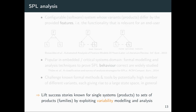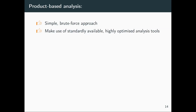Another slide from Christian: with 320 optional features, we have more configurations than estimated atoms in the universe. What I work on is lifting what we know how to do in formal methods for single systems — for one product — and applying it to the field of product lines, exploiting the variability in configurable systems.